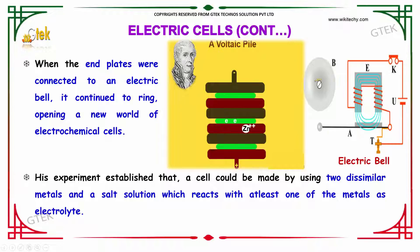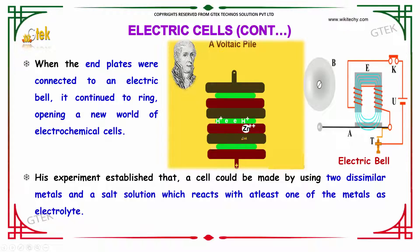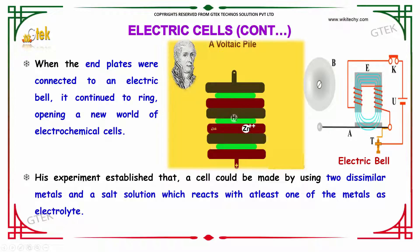His experiment established that a cell could be made by using two dissimilar metals — you are able to see two dissimilar metals — and a salt solution which reacts with at least one of the metals, serving as the potential of the metals in this process as electrolytes.